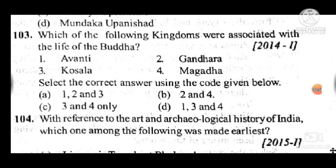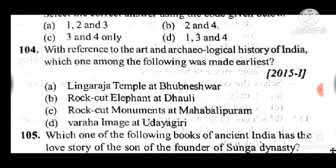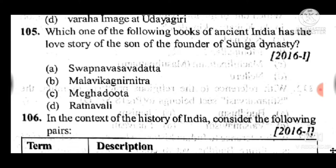Question 103: Which of the following kingdoms were associated with the life of the Buddha? Answer is C — three and four, Kosala and Magadha. Question 104: With reference to art and archaeological history of India, which one was made earliest? Answer is B, the rock-cut elephant at Dhauli. Question 105: Which one of the following books of ancient India has the love story of the son of the founder of the Shunga dynasty? Answer is B, Malavikagnimitram.